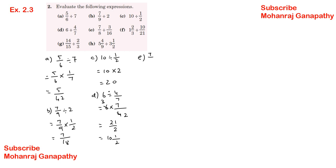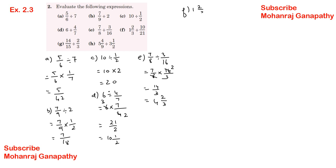E: 7 by 8 divided by 8 into 16 divided by 3. This equals 14 by 3 as an improper fraction, which is 4 and 2 by 3. F: 1 and 2 by 3 divided by 10 by 10.